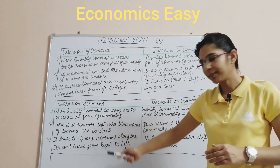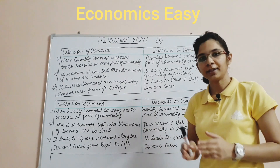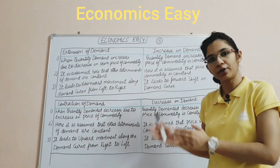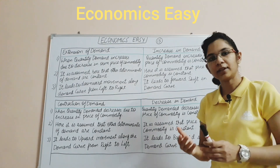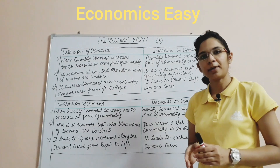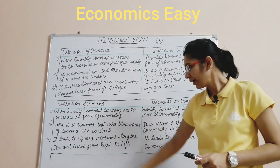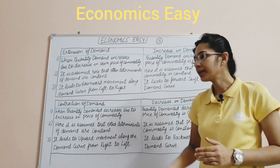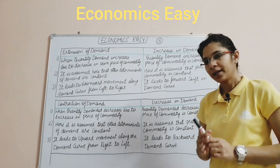In contraction of demand, it is assumed that other determinants of demand are constant — price of related goods, income of the consumer — these are held constant. In decrease in demand, what is assumed constant is the price of the commodity. Contraction of demand leads to an upward movement along the demand curve from right to left.